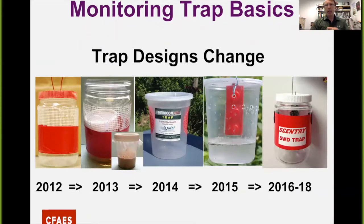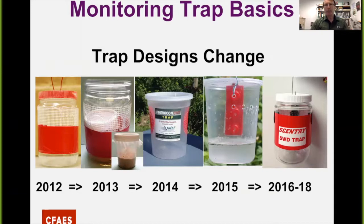Over the years, we've had a lot of changes in the trap design. In 2012, we were using peanut butter jars, red duct tape, and drywall tape in some form. We went through some modifications in bait, used some commercial traps in 2014 into 2015, deli jars, and those kinds of things. But in the last couple of years — 2016 through this year — we've really settled on the Sentry trap. We think it's a pretty durable trap that screens out larger insects, and we're quite happy with it.